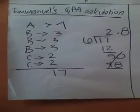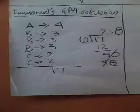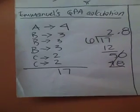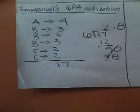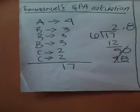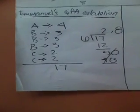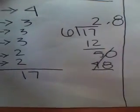Let's put hands-on Emanuel's GPA calculation. Based on his grades, we converted his grades into points, then we added them up, which we got a grand total of 17. So then we divided 17 by 6, the total number of classes, and we got 2.8 as his GPA.